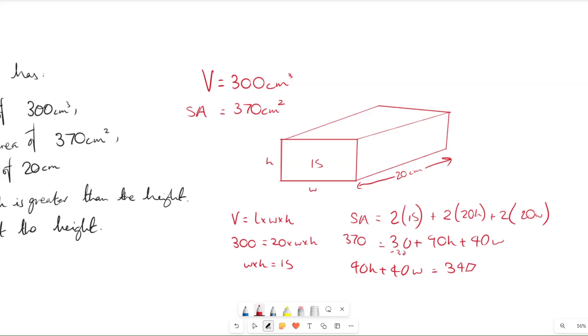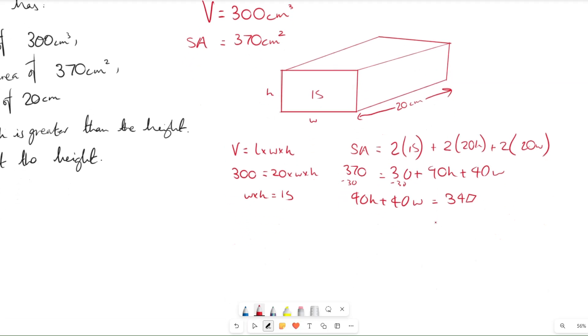We know that the surface area equals 370, so we can say that 40h plus 40w equals 340, because we subtract 30 from both sides. Then we can divide by 10 to get the numbers a bit smaller, so we get 4h plus 4w equals 34, and then 2h plus 2w equals 17.